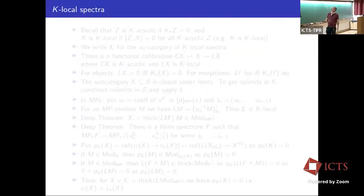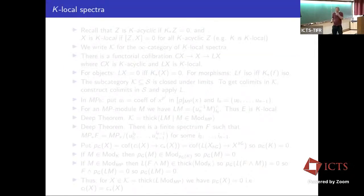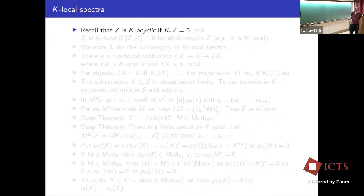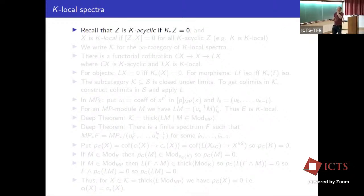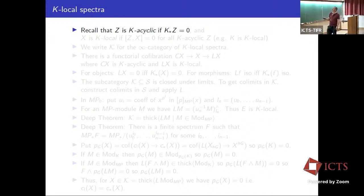The main Ambidexterity theorem we're aiming towards is formulated in the category of K-local spectra, so let's have a few reminders about how that category works. We have a spectrum Z, and K is our Morava K-theory — the two-periodic Morava K-theory spectrum. We say that Z is K-acyclic if the K-homology of Z is trivial, and that X is K-local if it has no maps from any K-acyclic object Z.